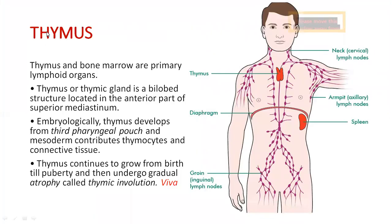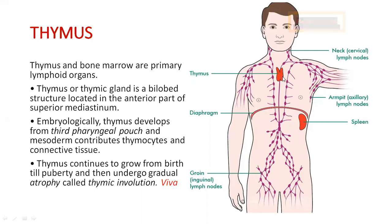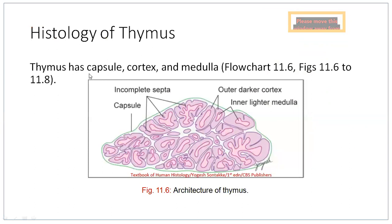Now we move to the second primary lymphoid organ: the thymus. Thymus and bone marrow are primary lymphoid organs. The thymus is a bilobed structure in the anterior part of the superior mediastinum. Embryologically, the thymus develops from the third pharyngeal pouch; mesoderm contributes to thymocytes and connective tissue. The thymus continues to grow from birth till puberty; after puberty the size of the thymus gradually shrinks — this is called thymic involution. The outermost covering is the capsule.